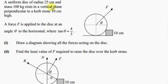A uniform disc of radius 25 cm and mass 100 kg rests in a vertical plane perpendicular to a kerb stone 10 cm high. A force F is applied to the disc at an angle theta to the horizontal, where tan of theta is 4 thirds.